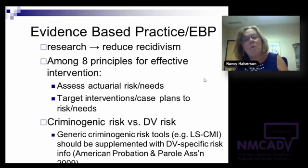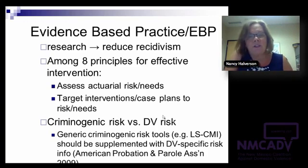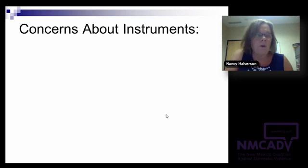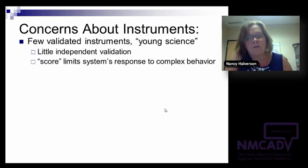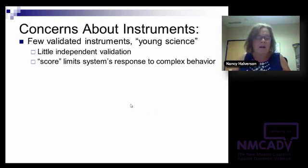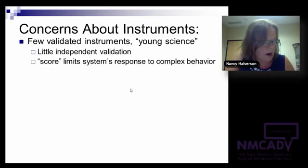There's a dispute about whether the actuarial method is as effective as the clinical. A clinician might say they ought to be able to diagnose what's going on with a person, as opposed to an actuarial method, which takes common factors from people who have proven to be high risk and applies them to others to determine how risky they are.